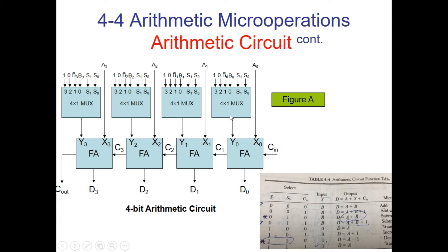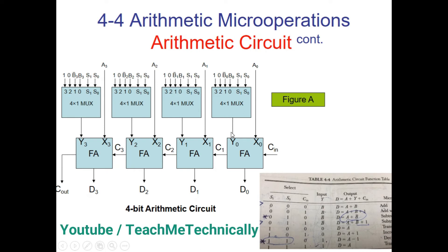Now with the same selection 0 1 so complemented B values are coming in, but carry bit is now 1. The output would be A plus B complement plus 1.